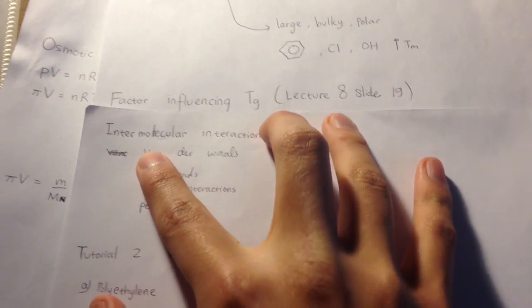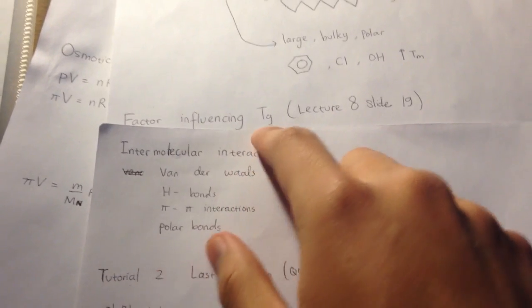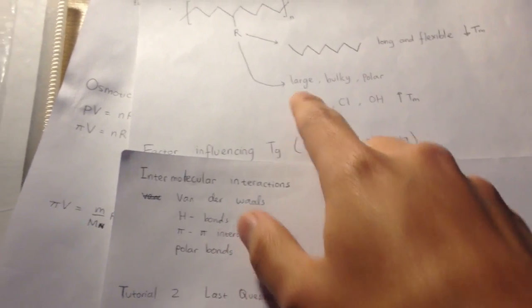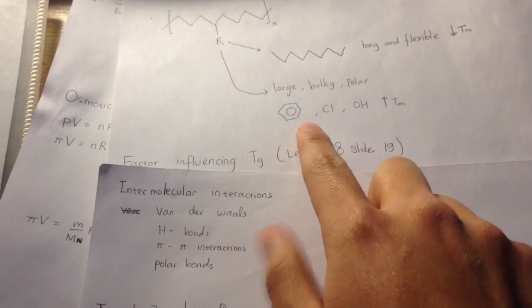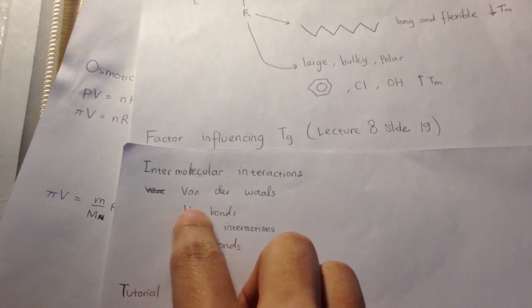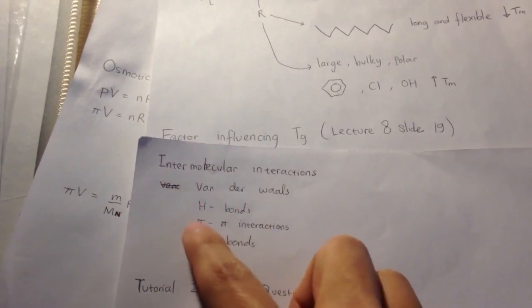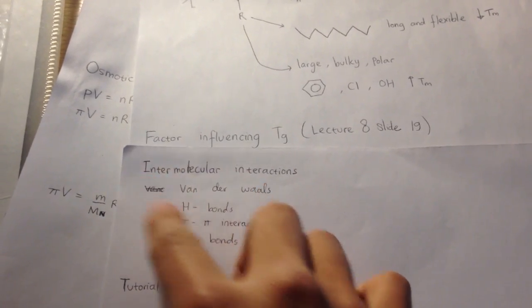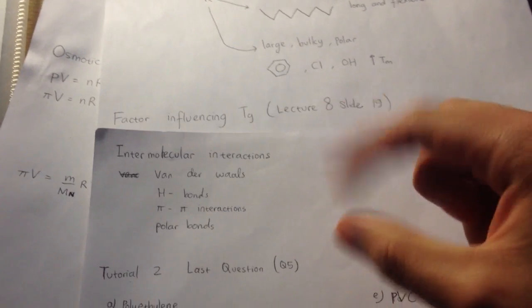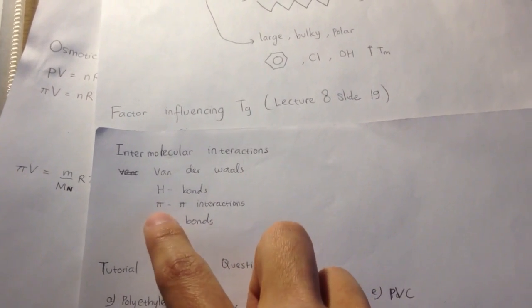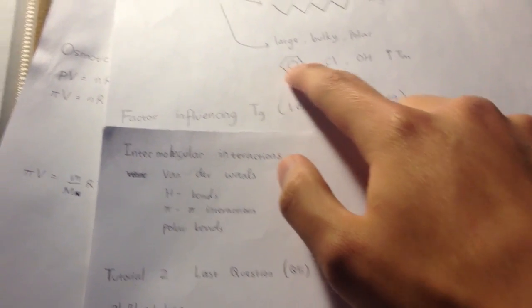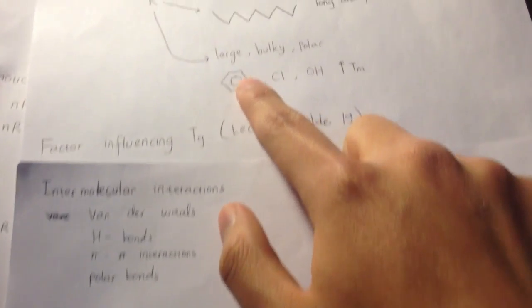On lecture 8, they talk about factors influencing TG. Actually, the melting point and the glass transition are quite connected, so you can use the melting point consideration for TG. I just want to highlight the forces. Like hydrogen bonds in the side groups, like OH. Polar, like Cl, creates dipole-dipole interaction. Or pi-pi interaction. Benzene actually contains pi bonds and it will make pi-pi interaction.